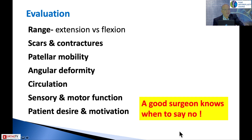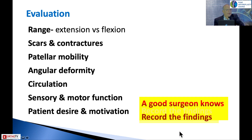Look at the sensory-motor function, and last but definitely not the least, look at the patient's desire and motivation. Based on this, the first thing you need to decide is whether you should be doing surgery at all. If you have an unmotivated patient and you do the surgery, six months down the line the patient may still be in bed with recurred contractures because they lack the motivation to do physiotherapy. And record all your findings, because these cases can go south and you need everything on record.